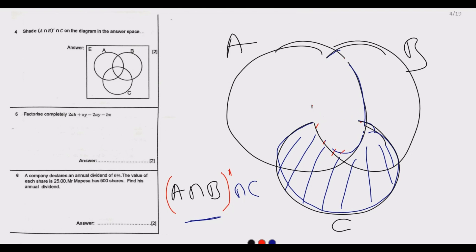This is how you deal with set intersection and complements. The shaded region is basically set C, with A intersection B removed — that is, everything in C that is not also in both A and B.